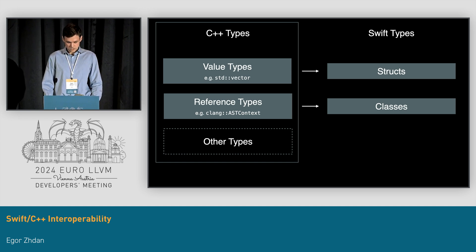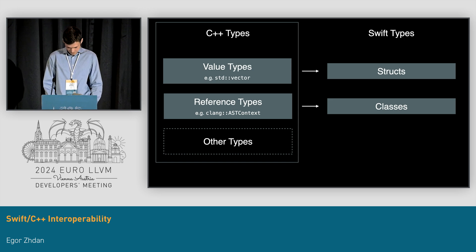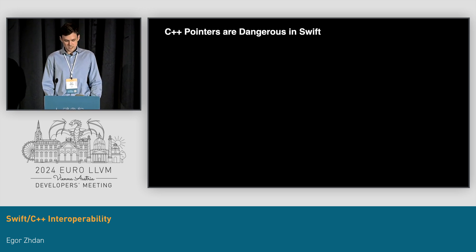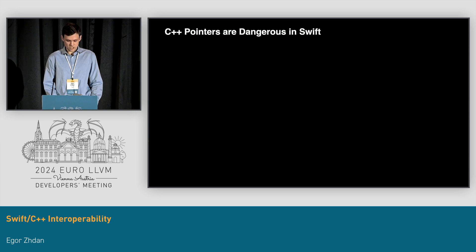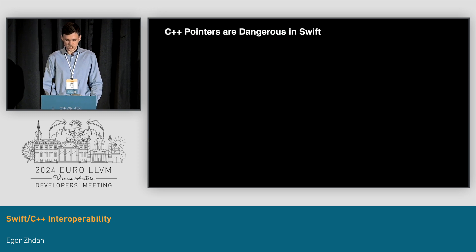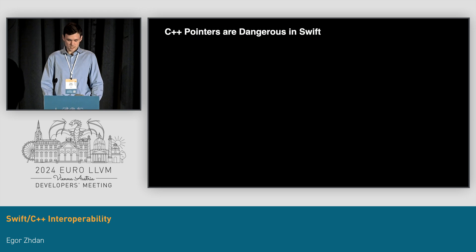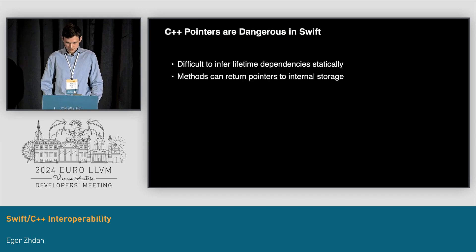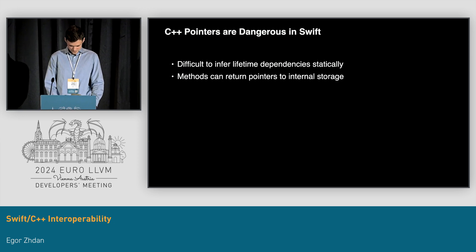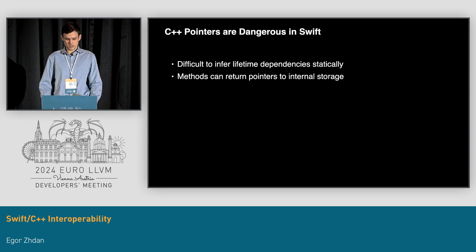C++ code bases tend to use pointers ubiquitously, and this presents a danger to Swift and C++ interoperability. The main source of this danger comes from the difference in memory management models between the two languages. While C++ uses lexical lifetimes — meaning a value will generally get deallocated at the end of the block where it is declared — Swift can deallocate a value after its last use, and the last use is determined statically. So if a C++ method returns a pointer, the Swift compiler has no way of knowing if the lifetime of the pointer is somehow attached to the lifetime of the value on which the method was invoked.